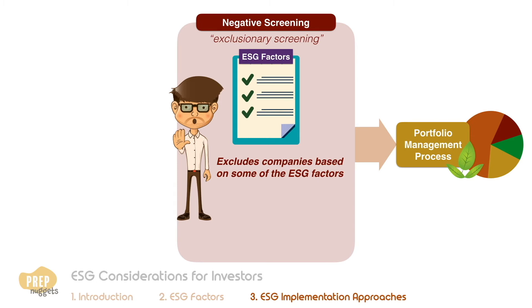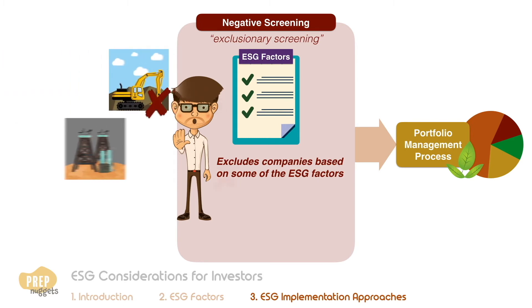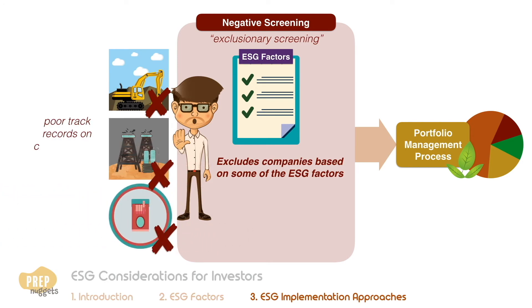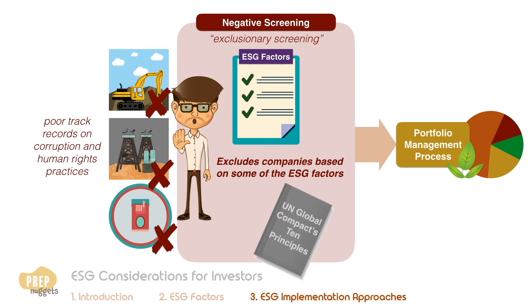For example, specific mining, oil extraction, transport, and tobacco companies may be excluded due to poor track records on corruption and human rights practices. Many of these negative screens use specific standards such as the UN Global Compact's 10 principles on human rights, labor, the environment, and corruption to identify companies that should be excluded.